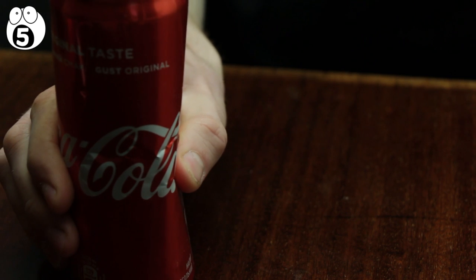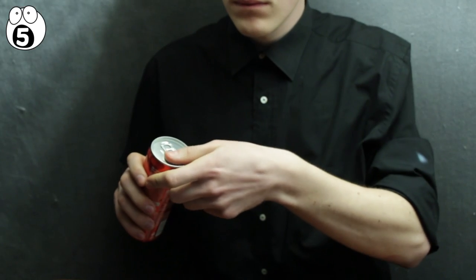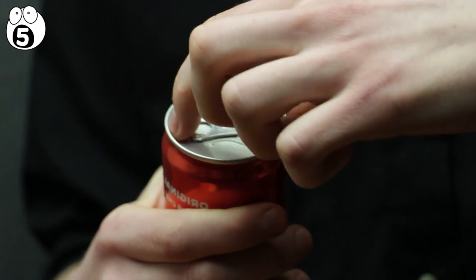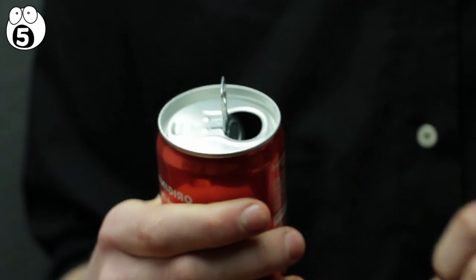Number 5, restore a can. Watch this empty, open Coke can. All it needs is a little rub with a thumb and it's restored. This one is so easy and will be brilliant to perform at a party.